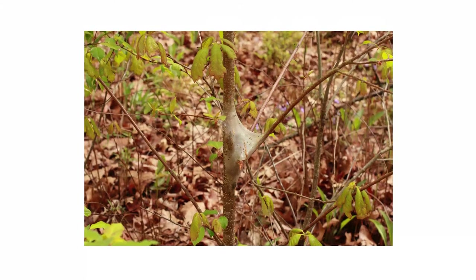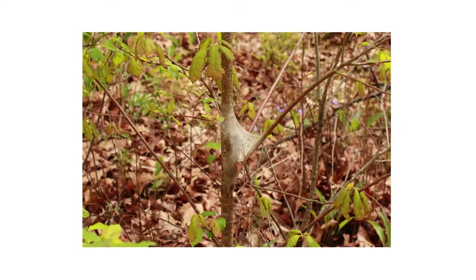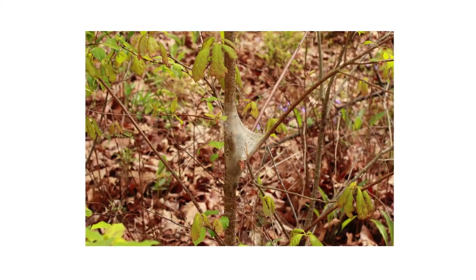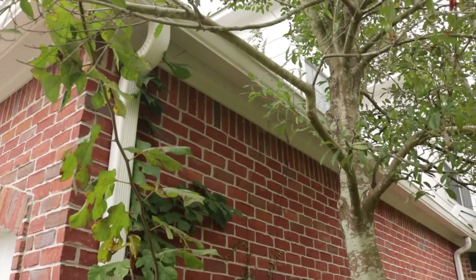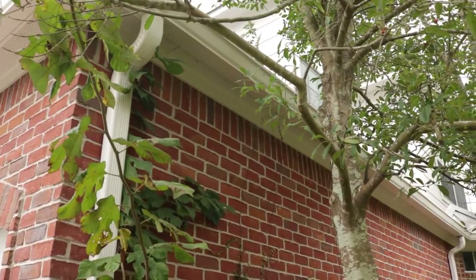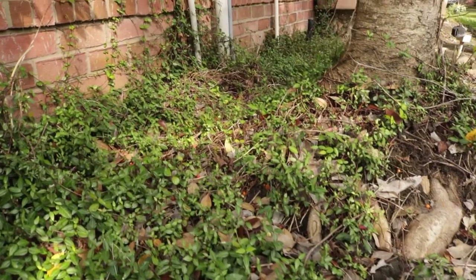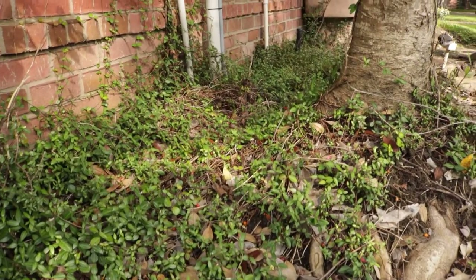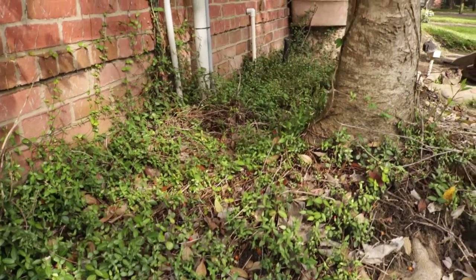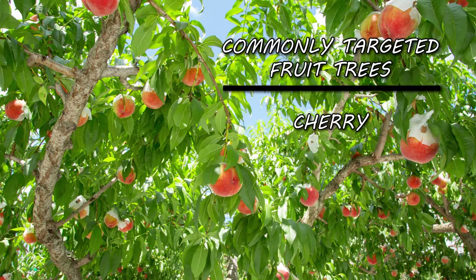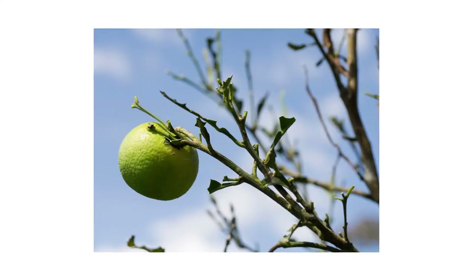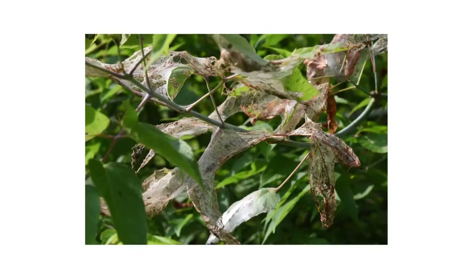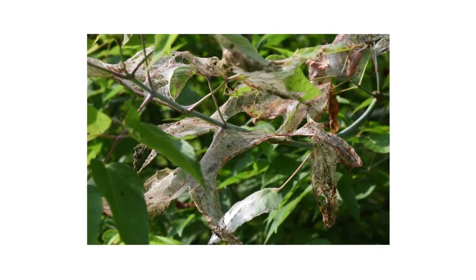Inspection is the next phase of any good pest control plan. Once you know what your pests look like, check around your property to confirm their presence or find hot spots of activity. Tent caterpillars typically target broadleaf trees, shrubs, and fruit trees like cherry, peach, plum, apple, and crabapple. Once they defoliate infested branches, they can spread to other nearby foliage.